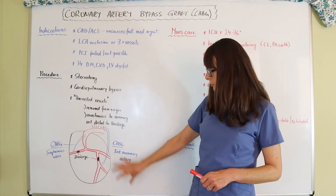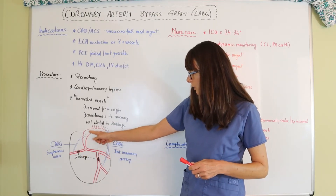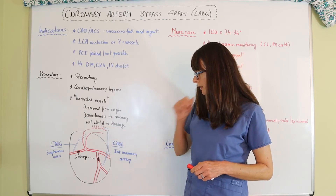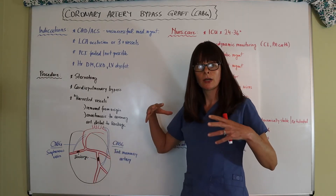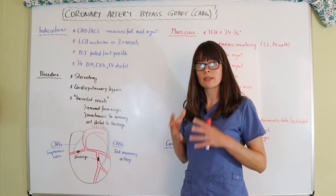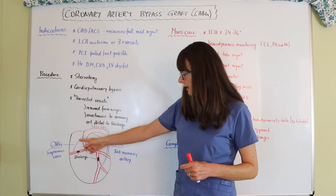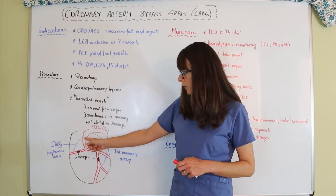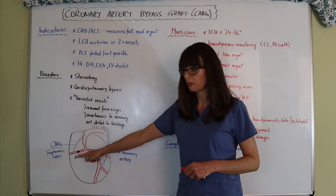Looking at the diagram: here we have the heart and coronary arteries, the aorta with the aortic arch, and branches going to the carotid and subclavian arteries. With a blockage present, blood ejected from the heart enters the aorta and first perfuses the coronary arteries. For a CABG done with a saphenous vein, the harvested vessel is sewn into the aortic arch and then distal to the blockage, creating a detour around the construction site.